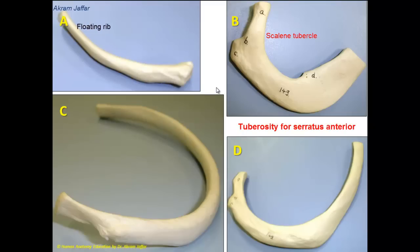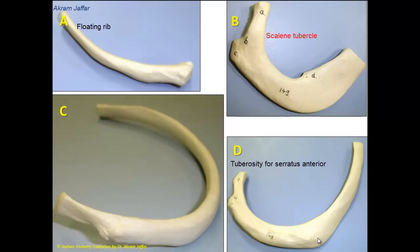Tuberosity for serratus anterior is a characteristic feature of the second rib. In D, we can see this is the second rib. It looks like a typical rib, but it is characterized by the presence of a big tuberosity for the attachment of serratus anterior muscle. Serratus anterior muscle is attached by eight digitations to the upper eight ribs, but specifically in the second rib, the attachment imprints a big tuberosity for serratus anterior.